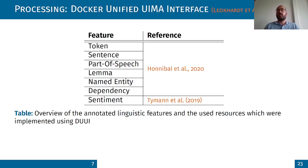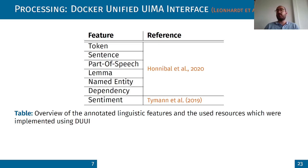We have different features available through the German parliamentary corpus. These are tokens, sentences, part of speech, lemma, named entity, and dependency parsing. These features are extracted via spaCy, and we have also included sentiment analysis.